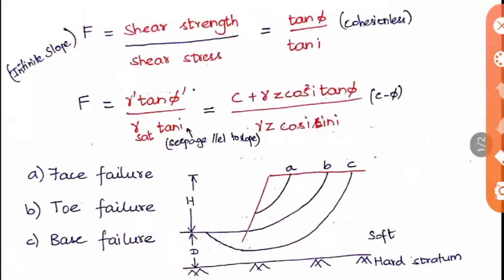The formula tan φ by tan i is specifically for cohesionless soil. Another factor of safety formula is γ' tan φ' divided by γ_sat tan i, which is specifically for soils where seepage is parallel to the slope. The general formula for c-φ soil is: F = (c + γz cos²i · tan φ) / (γz cos i · sin i), where i is the angle of the infinite slope and φ is the angle of internal friction.